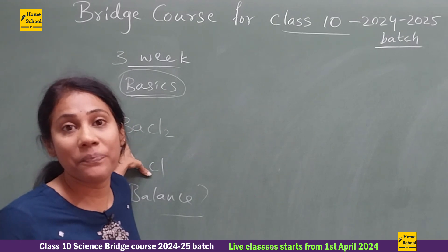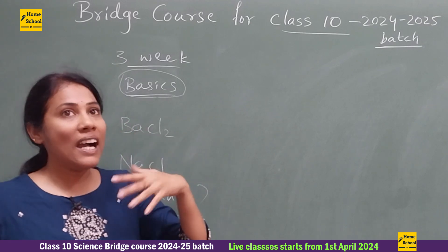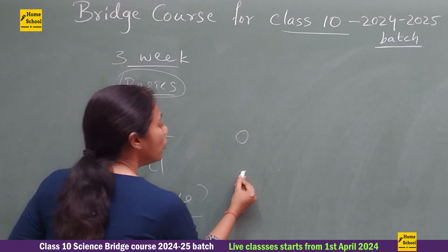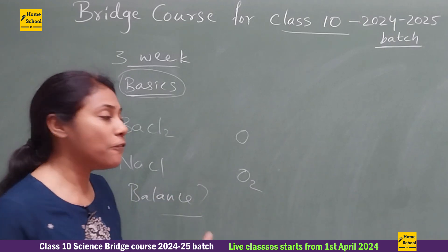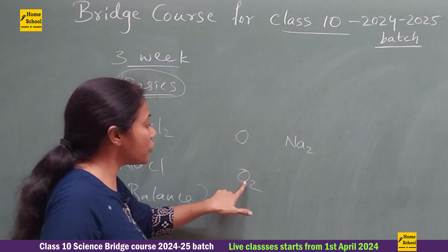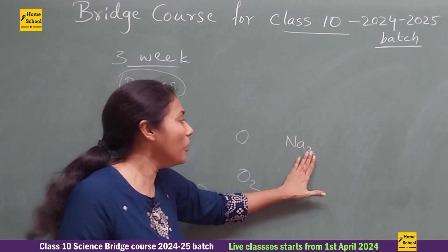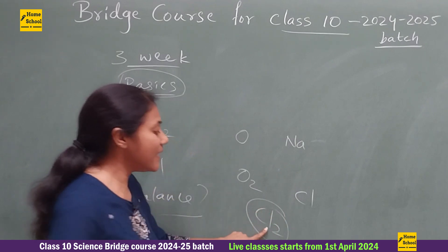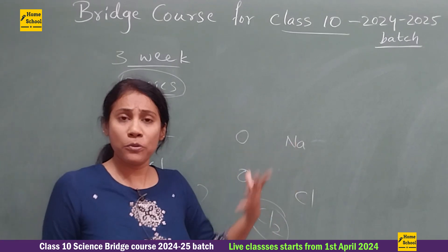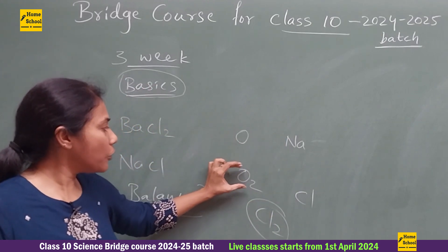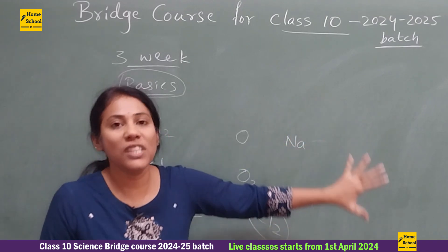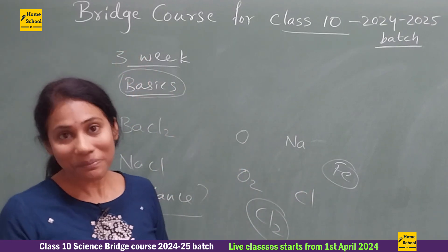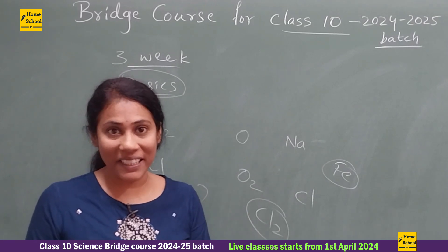Many students in my sessions, when supposed to write oxygen in a chemical equation, just write 'O' — but oxygen has to be written as O₂. When asked to write the symbol of sodium, many write Na₂ because they saw O₂ and assume Na should also have a 2. No — sodium is Na. Chlorine is Cl₂ because it exists in molecular form, while sodium exists in atomic form. For iron it is just Fe. How do you know which is which? I will cover all of that in the basics.